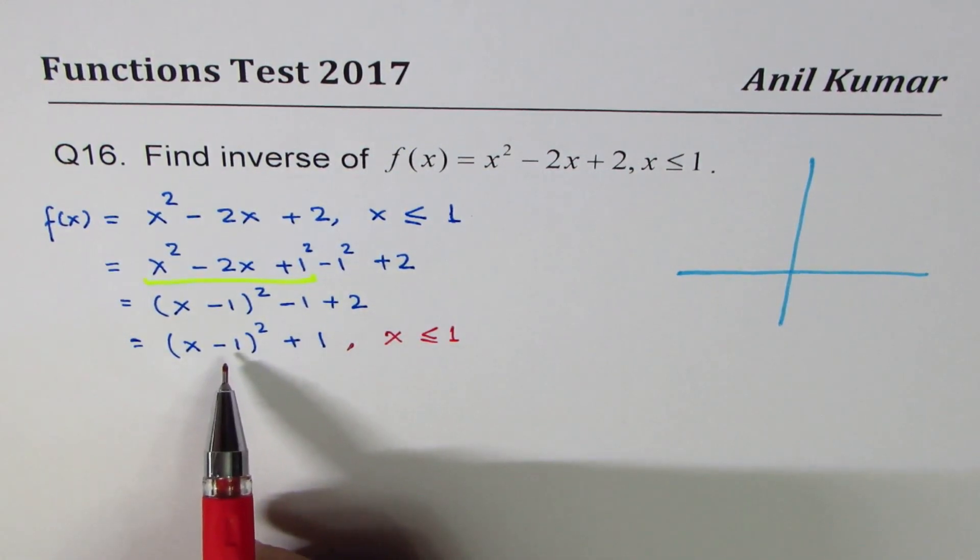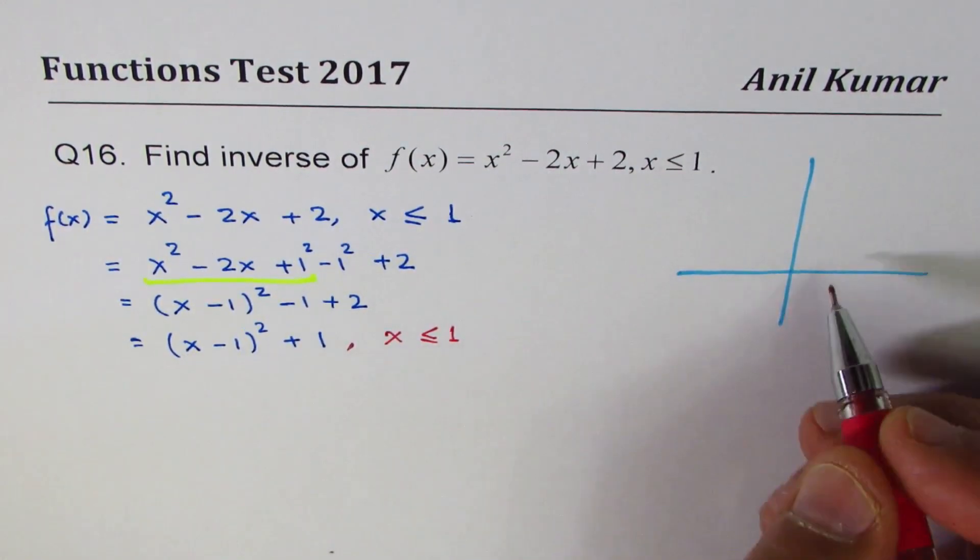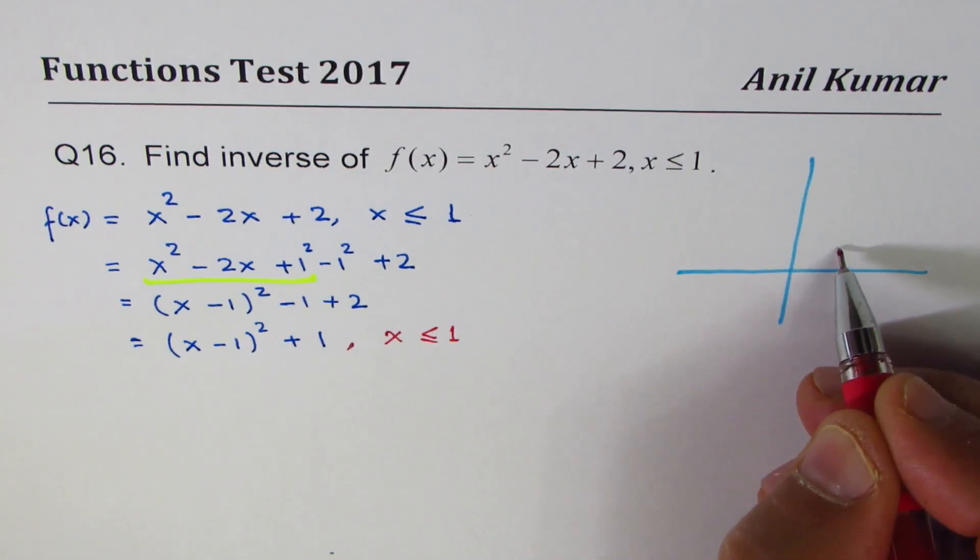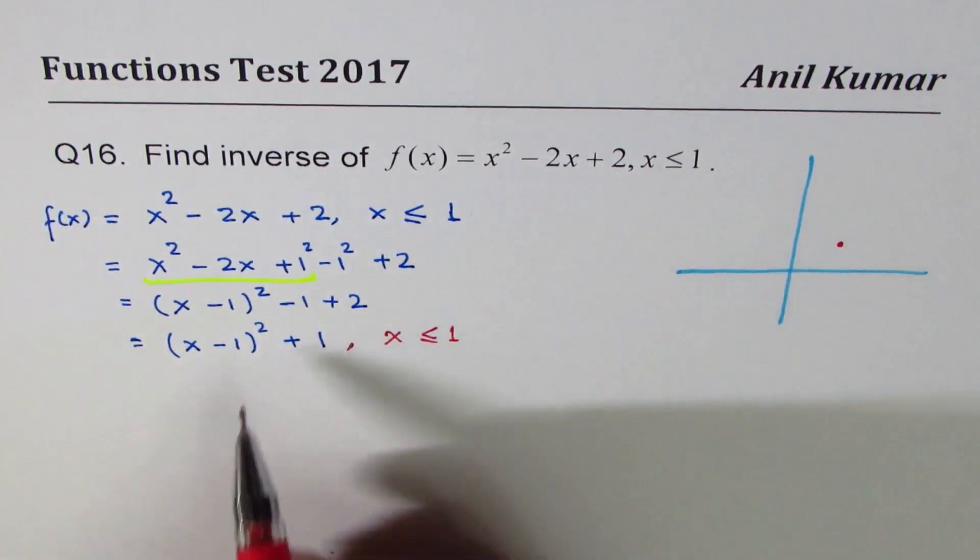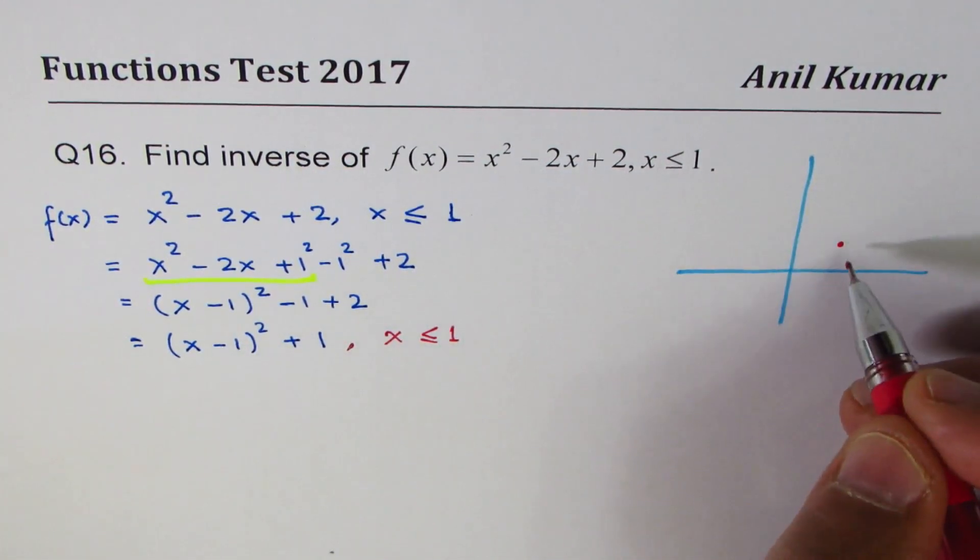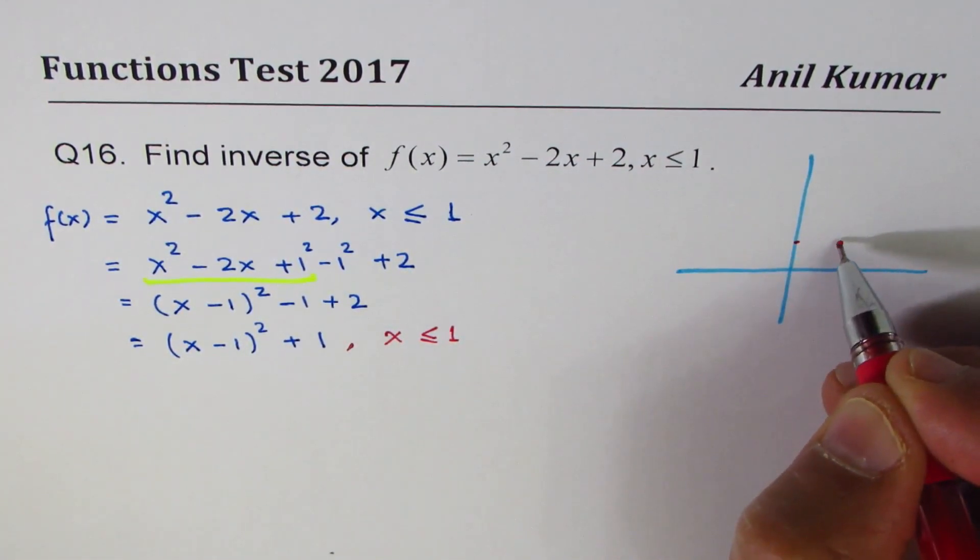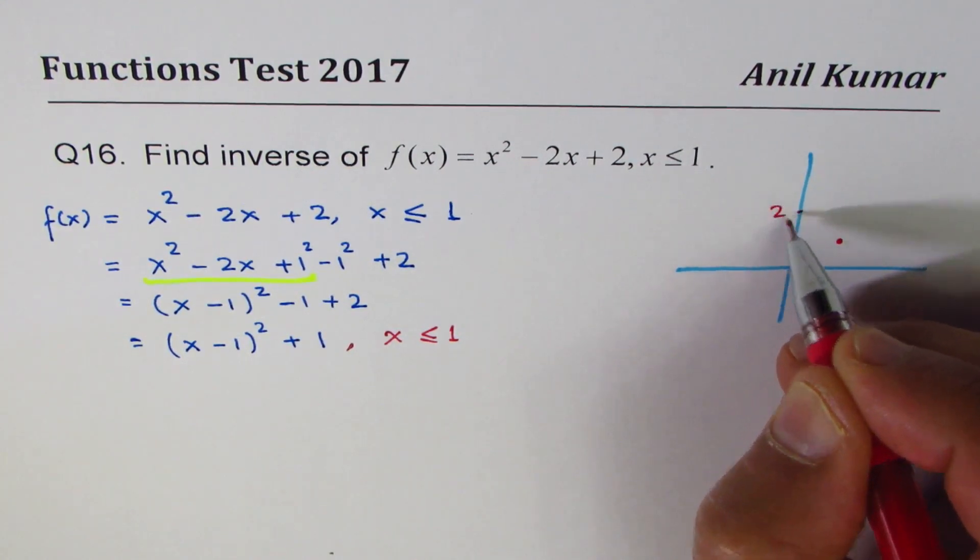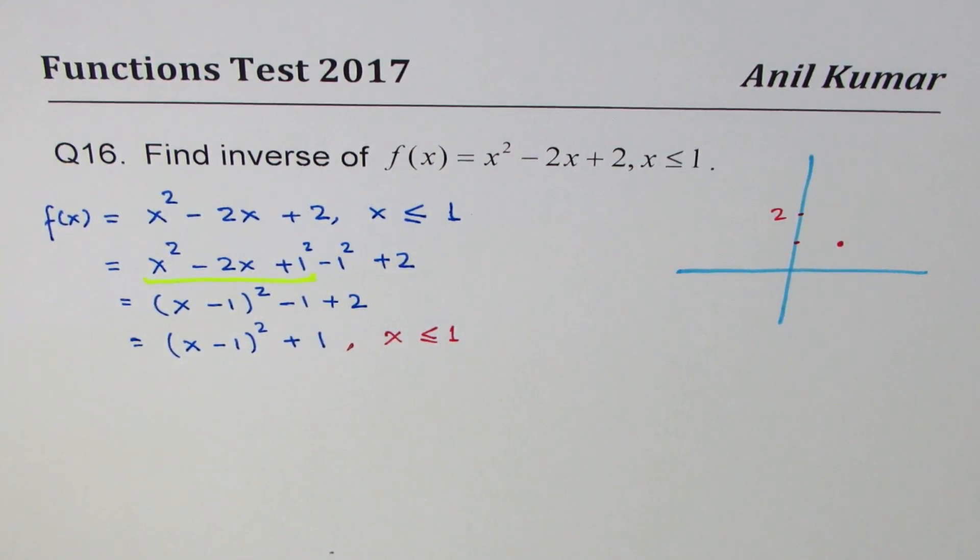It has vertex at (1, 1). The vertex is at (1, 1). It opens up with steps of 1, 3, 5, 7. It is 1 here, so next time it will be at 2. This will be the point. The graph of this function could be sketched as... let me sketch a dotted graph first.